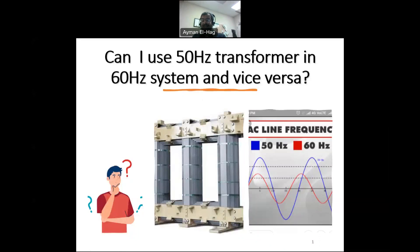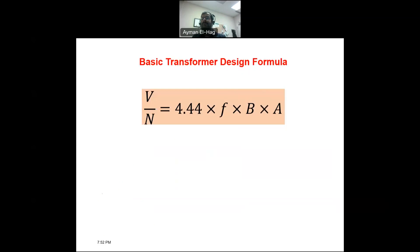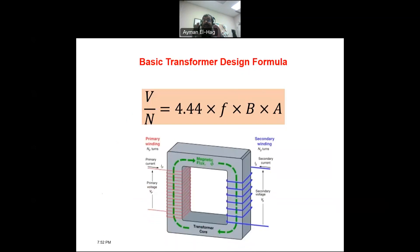The question is, if I design a transformer to work in a 50 hertz system, can I use it in a 60 hertz system and vice versa? And to answer this question, we need to start from the fundamental, the basic transformer design formula, which is the voltage per turn is equal to 4.44 times the frequency times B, the flux density times A, the cross-section area of the core. So, let's first understand this formula, and then let's try to understand from where it comes, how we derive this formula, and then use that formula to basically answer the question.